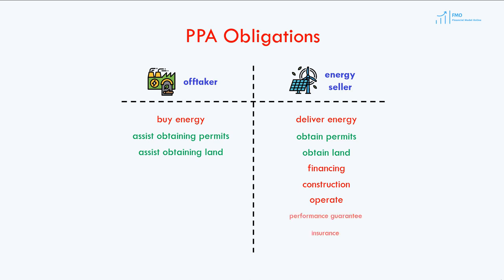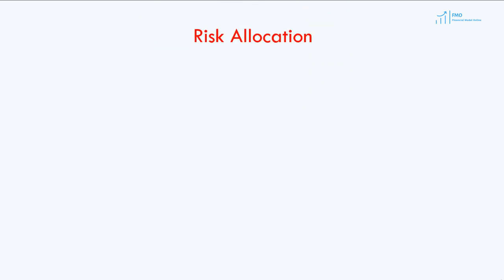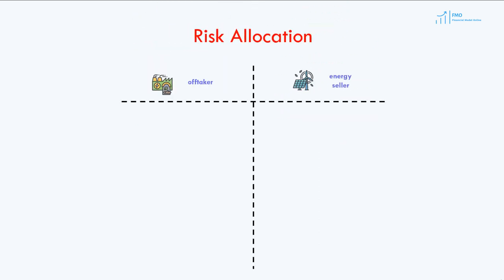The energy seller is obliged to maintain necessary performance guarantees and insurance policies during the construction and operation of the project. The obligations of the parties under the PPA create and allocate the project risks between the parties. For example, since it is the obligation of the off-taker to purchase the committed energy production during the term of the PPA, the off-taker takes the energy price and volume risks.